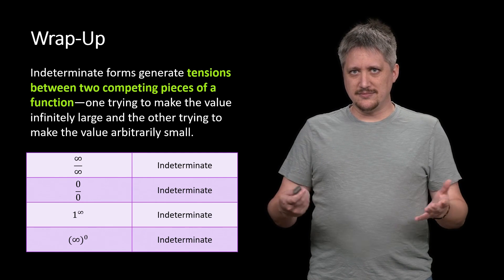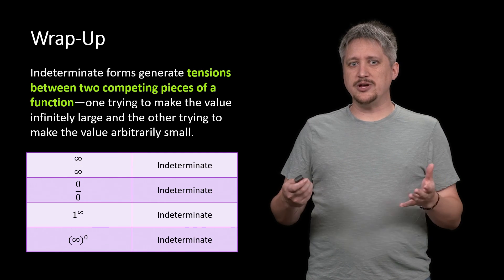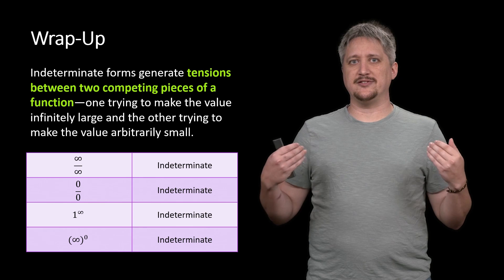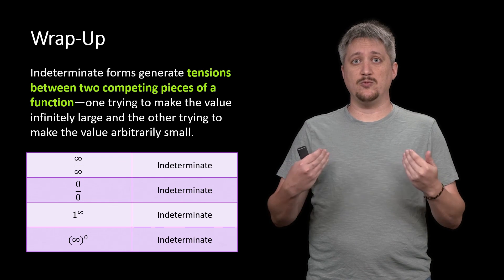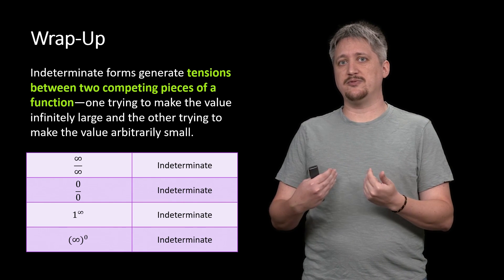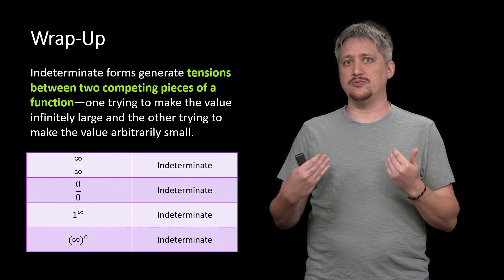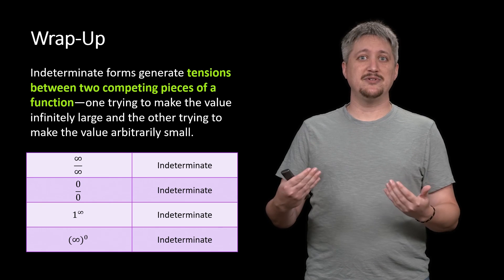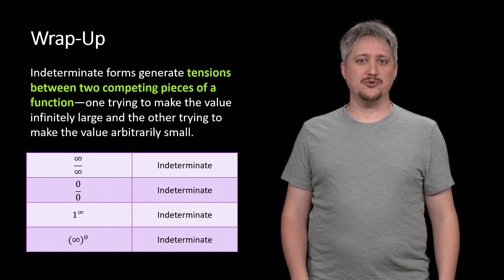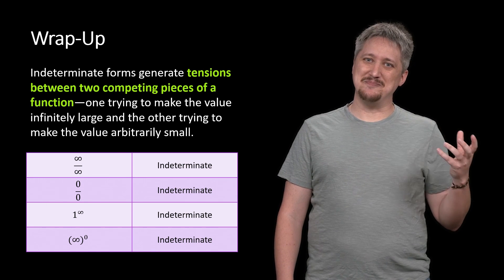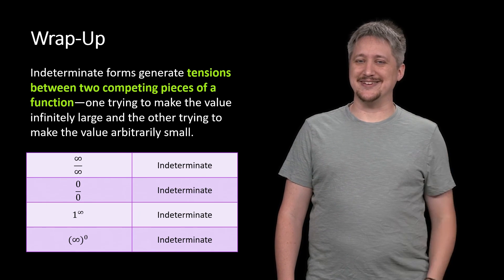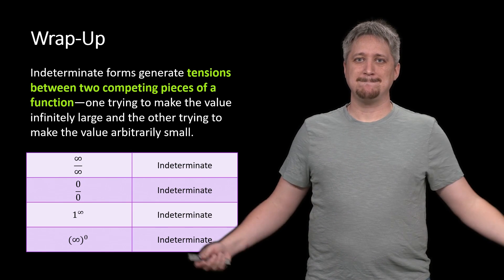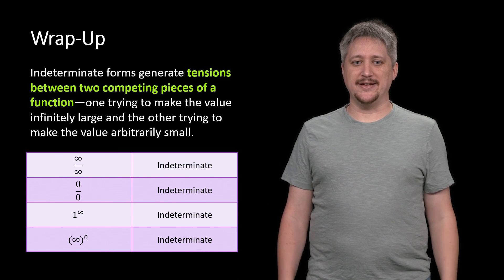In general, the way to think about indeterminate forms is as this tension: one thing trying to make it large, one thing trying to make it small. That way you don't mix up the many forms it can take. And that's it — see you next time.